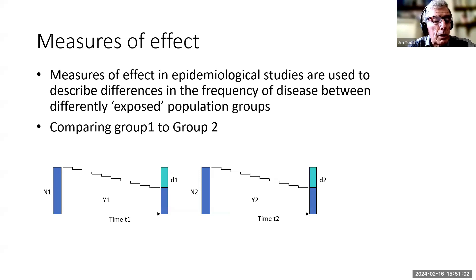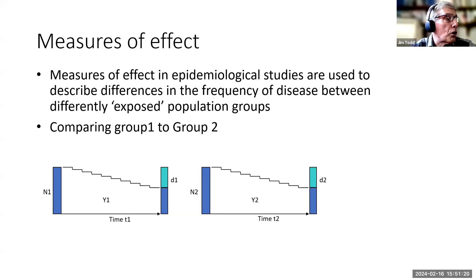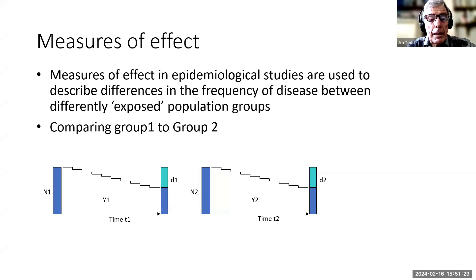Now I'm going to go on to say, if we're going to compare different groups — if we're going to compare an exposed group to an unexposed group — then we're going to get a measure of effect. This links up with what you've been talking about regarding odds ratios and other things like that. We can use measures of effect to describe the differences between the frequency of disease in the exposed population groups.